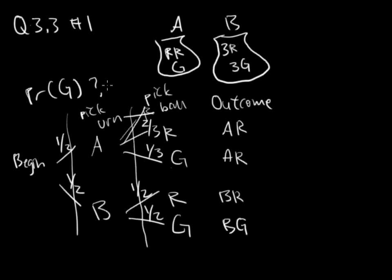We are only concerned about the probability of green, which is this one and this one. To find the probability of each outcome, we just multiply across. Here we have one-half times one-third for urn A and green, which is one-sixth. And then here we have one-half times one-half, which is one-fourth for urn B and green.